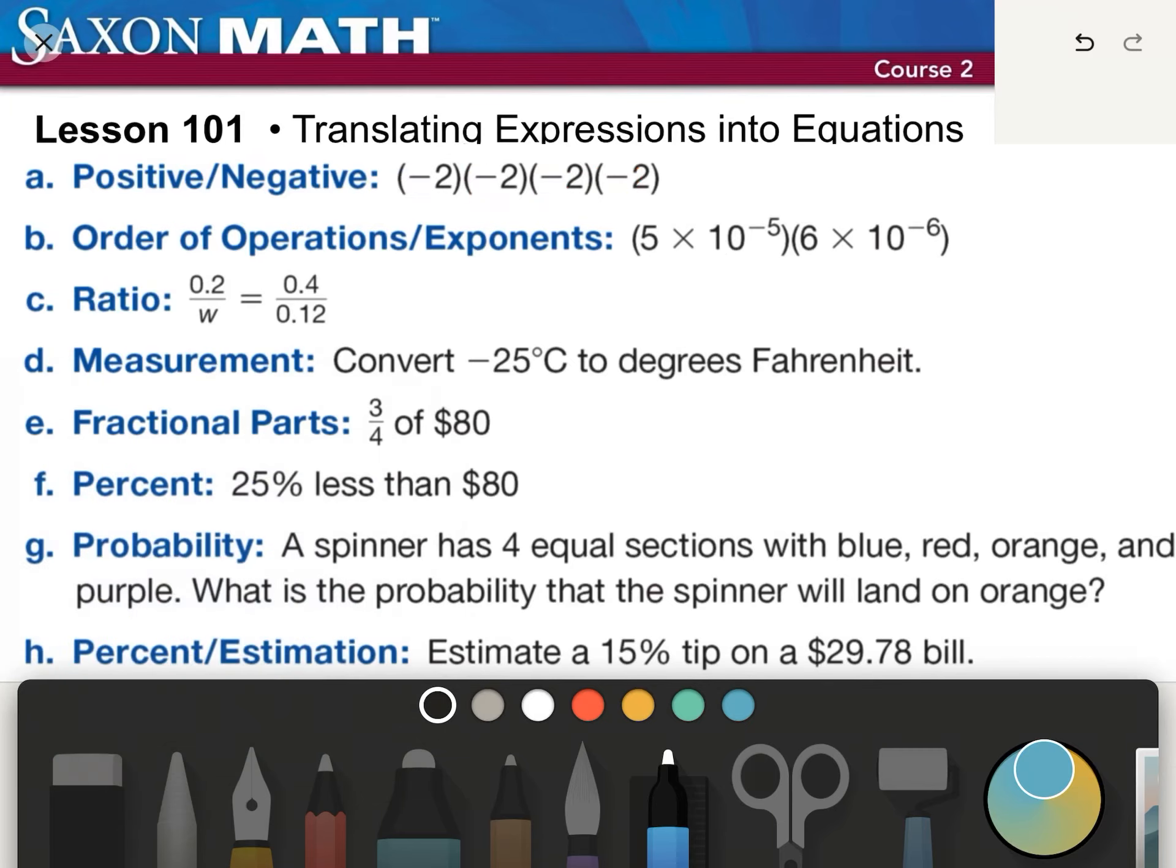Order of operations and exponents. Looking at these two, five times six is 30, and adding our exponents together - well, since we're multiplying them, would get us times 10 to the negative 11th power. But we want to do this as some form of scientific notation. So we can just say three times 10 to the negative 10th power.